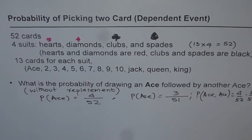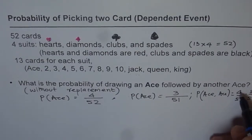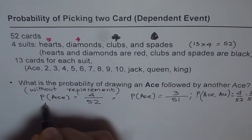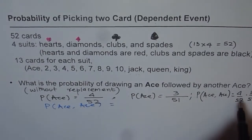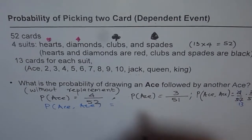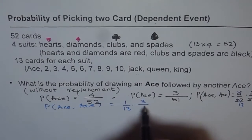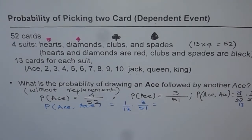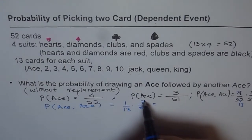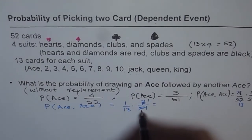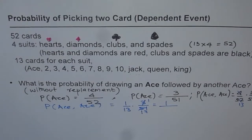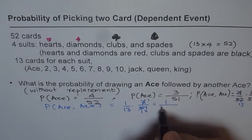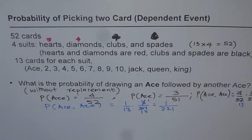So it is equal to 4 over 52 times 3 over 51. Now, as I said, it is important to know that 13 times 4 is 52, so that helps you simplify. We can write: probability of getting ace then ace without replacement equals 1 over 13 times 3 over 51. Since 3 and 51 can be simplified — 51 divided by 3 is 17 — we get 1 over 13 times 1 over 17, which equals 1 over 221.